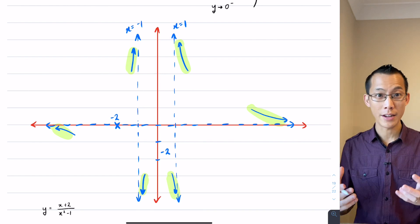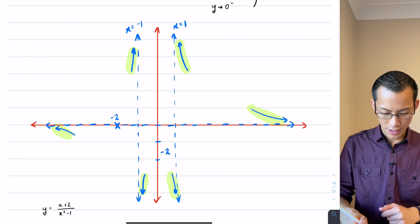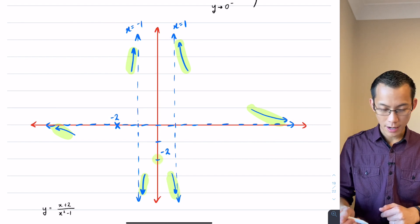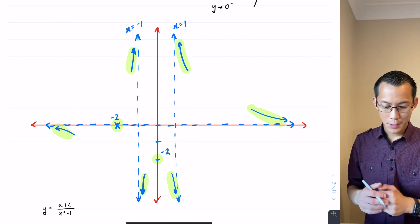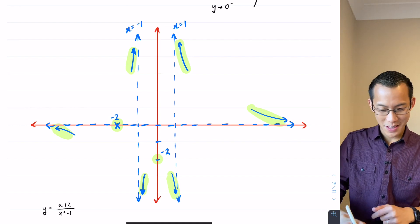And I should also mention I have an intercept here at negative two and then another intercept here at negative two, right? So now all that's left is to join the dots.